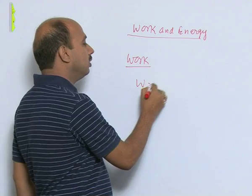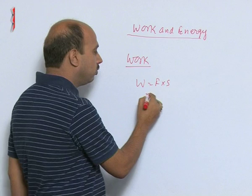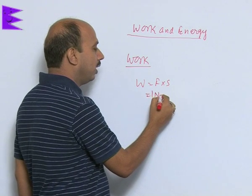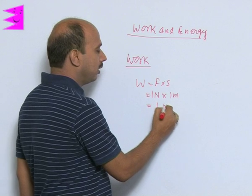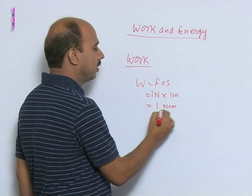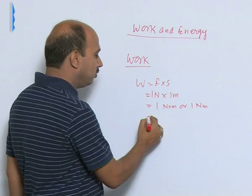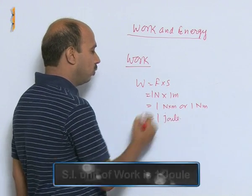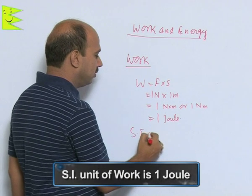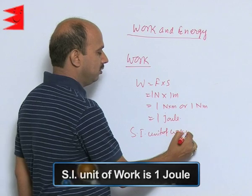Work equals force into displacement. If you write force in Newtons, that means 1 Newton into 1 meter. Work can be expressed as 1 Newton meter, which is also 1 joule. The SI unit of work is joule.